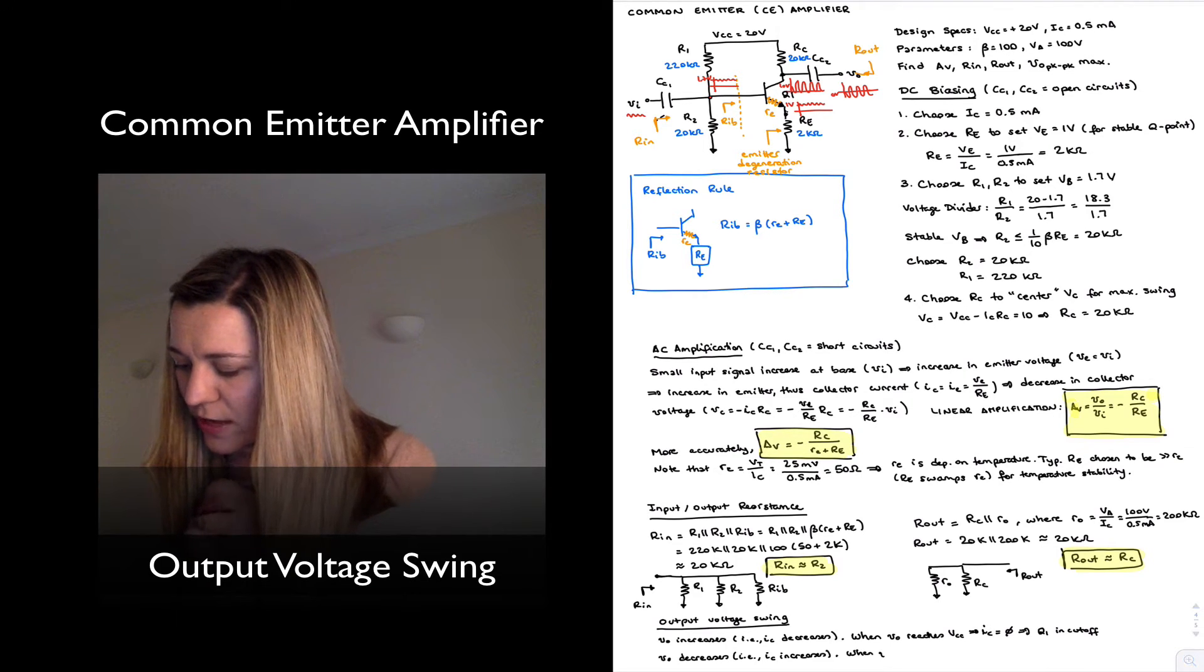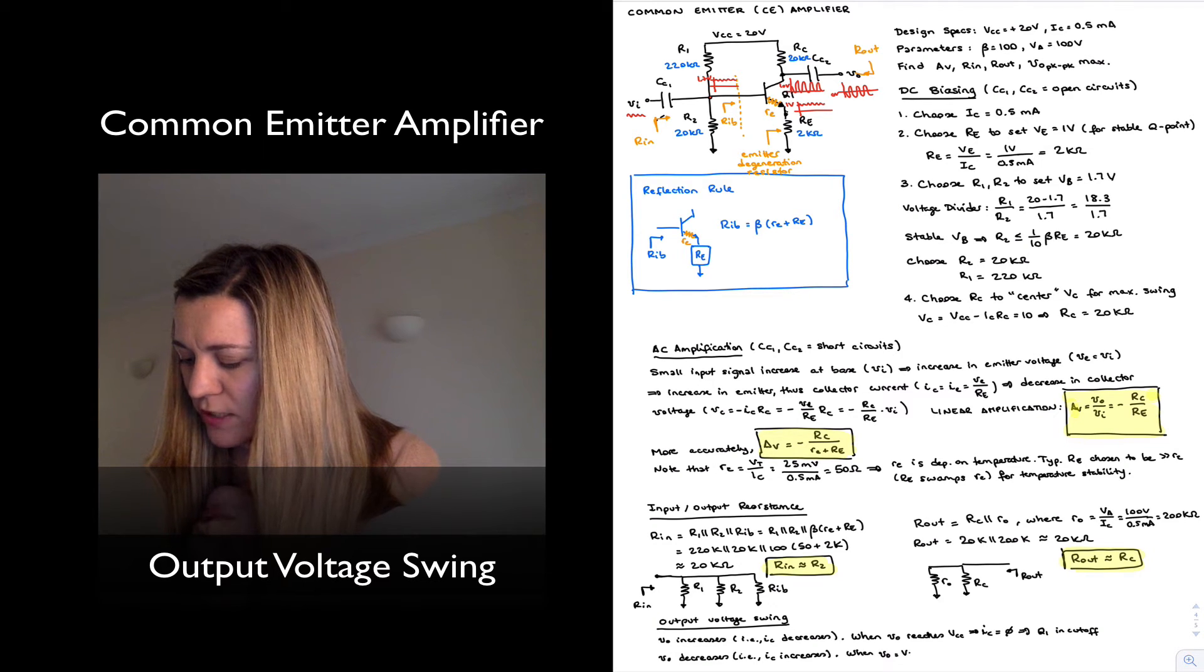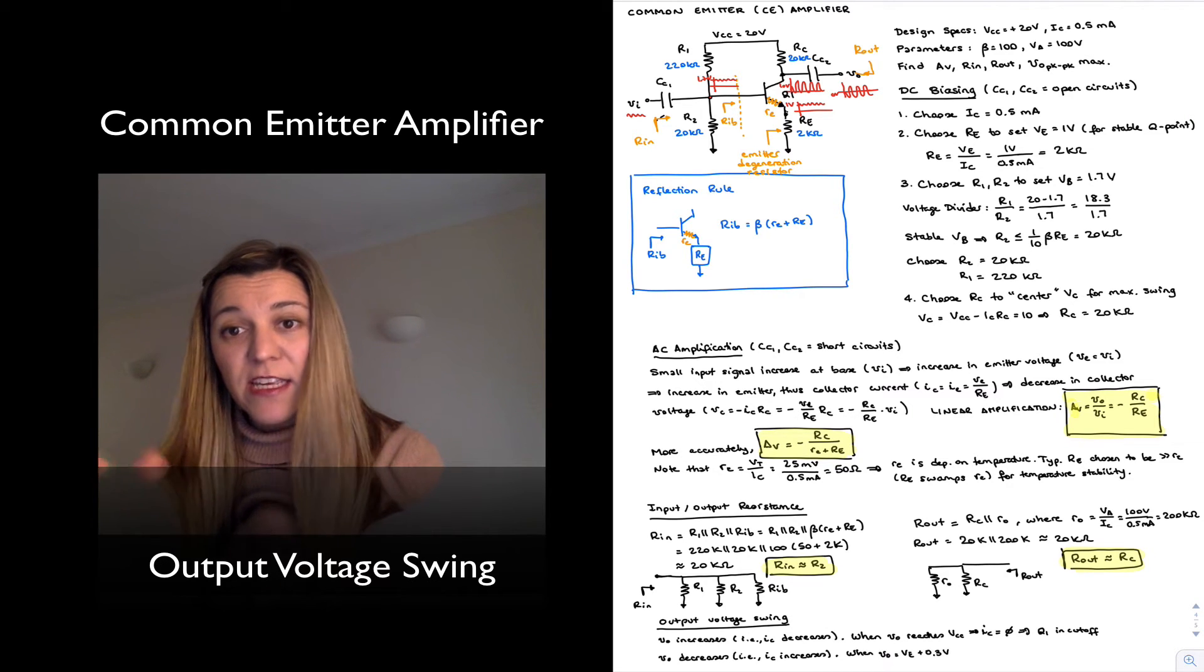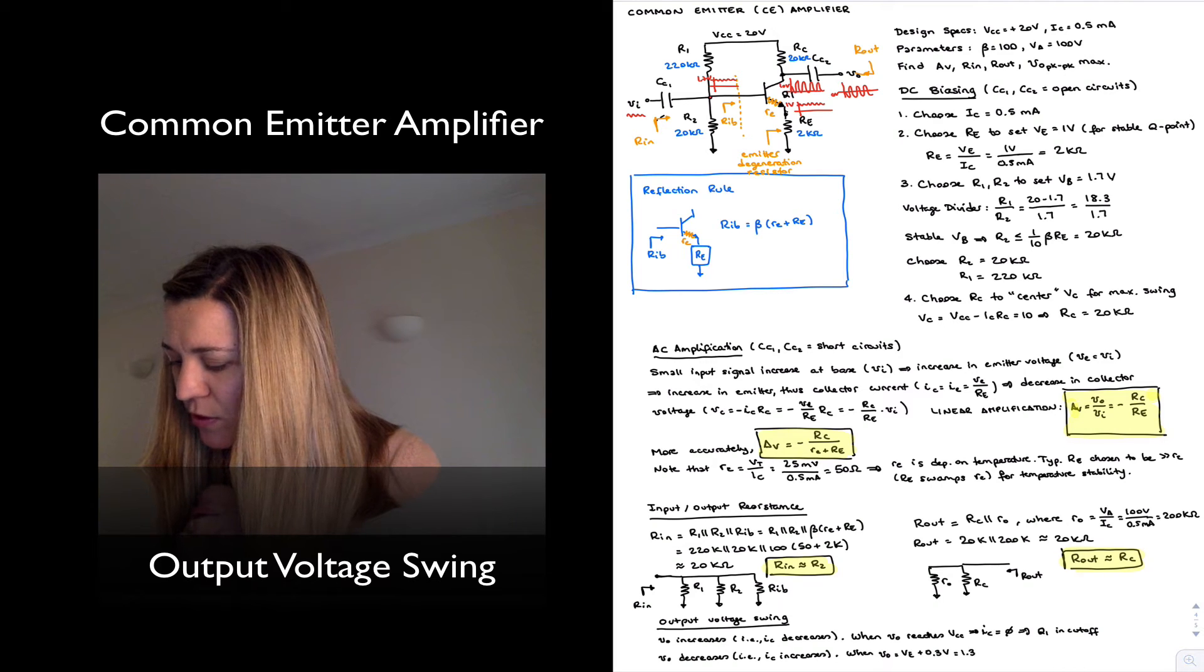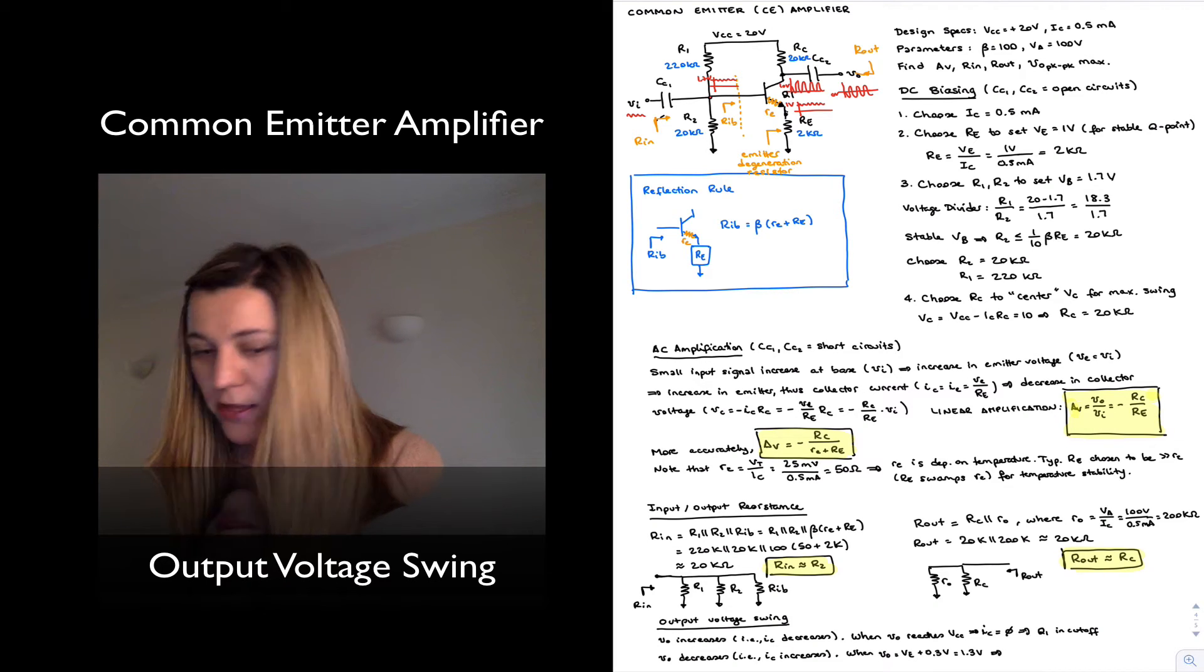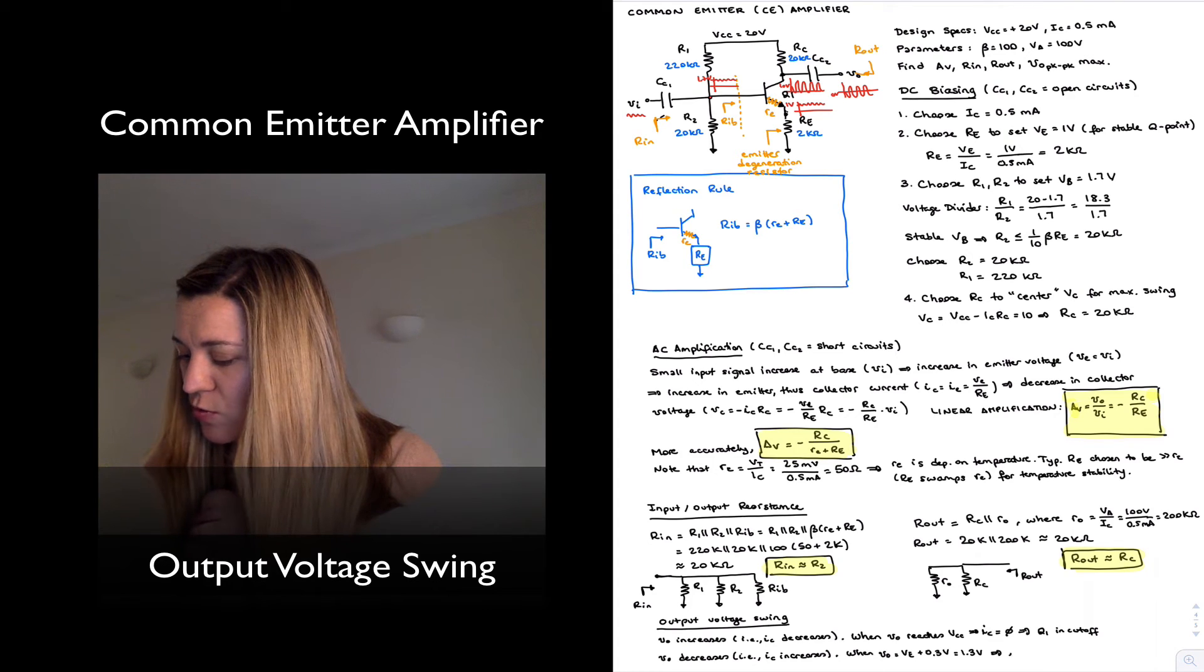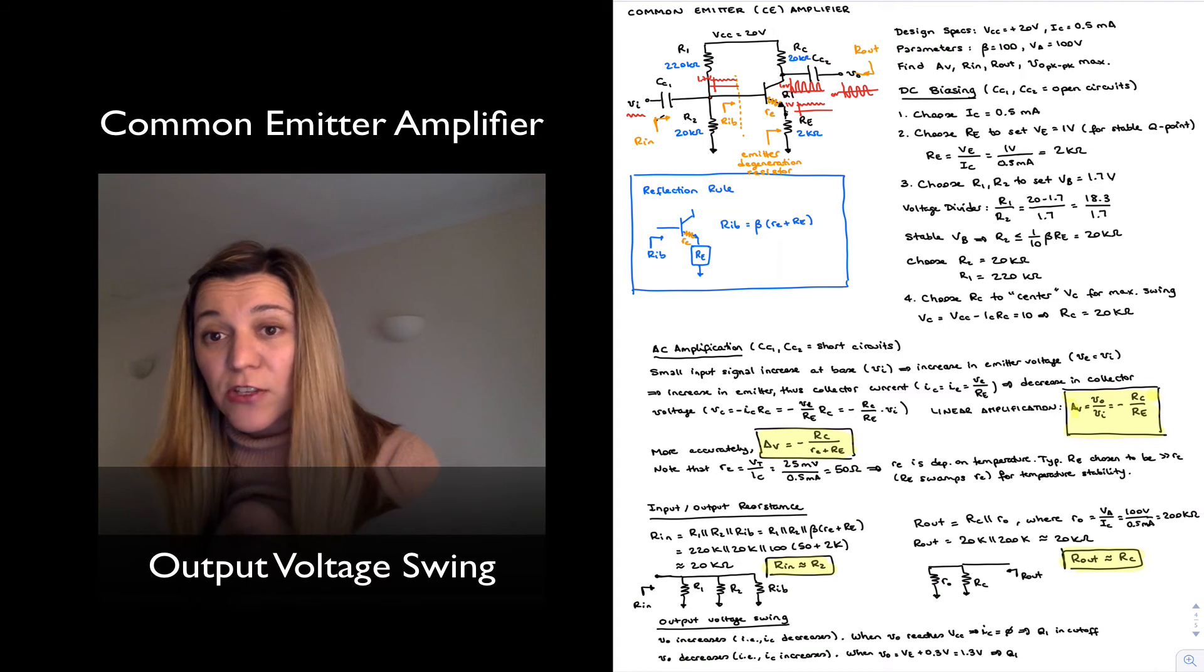When Vout is equal to 1 volt, which is VE, plus the 0.3 volts VCE that will keep the transistor out of saturation, in this case 1.3 volts, then Q1 is on the verge of saturation.